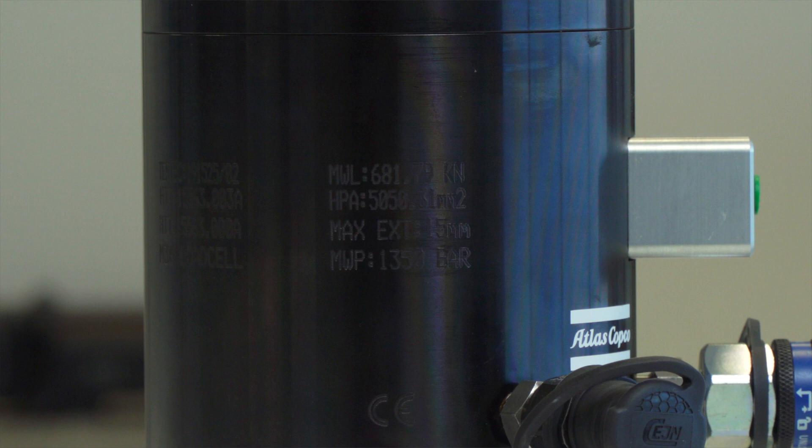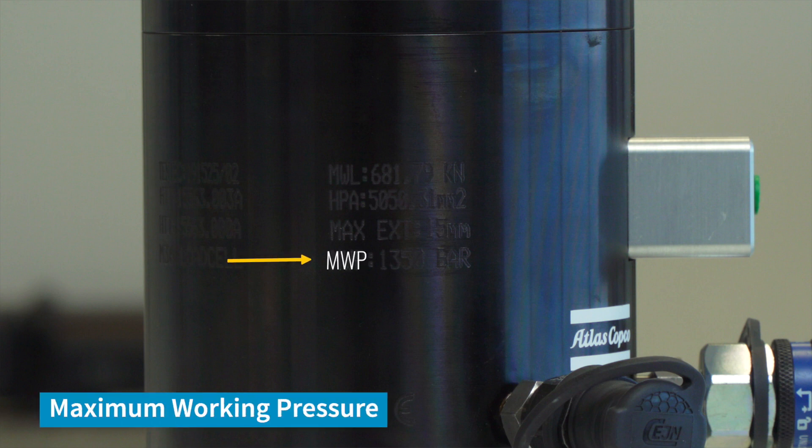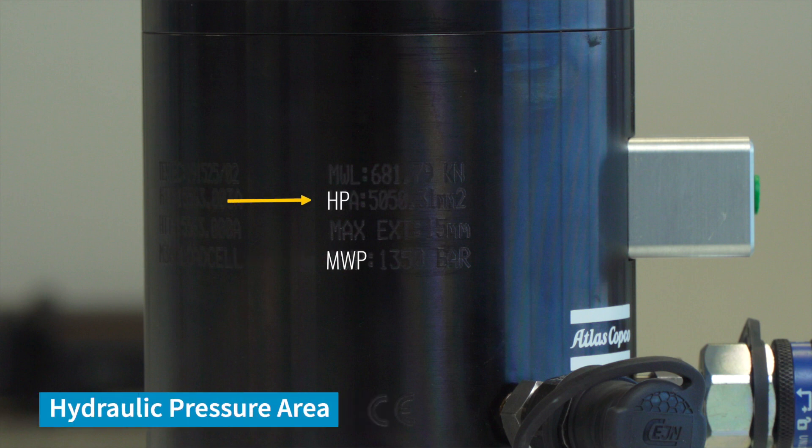Other details stamped on the body of the tool include MWP, maximum working pressure, HPA, hydraulic pressure area, and MWL, maximum working load.